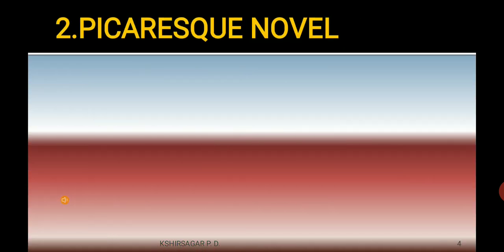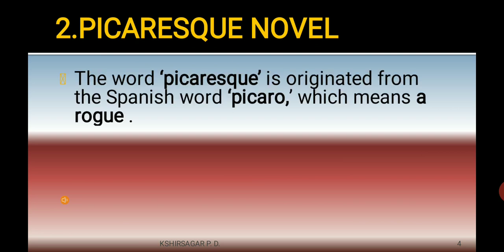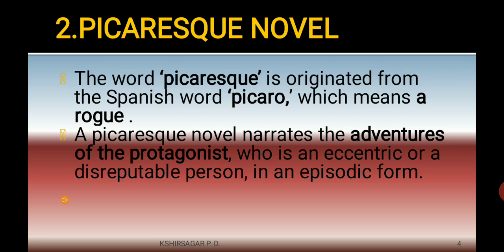The second type is the picaresque novel. The word picaresque is originated from the Spanish word 'picaresque,' which means a rogue. The protagonist or hero of this type is an eccentric or disreputable person, and the story is told in an episodic form.